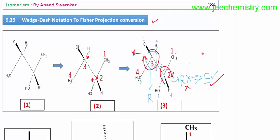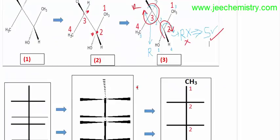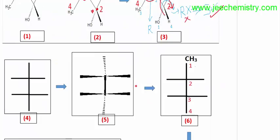Now we have to convert this to a Fischer projection formula. First of all, we write the bond notation of the Fischer projection formula. This is the Fischer formula with two chiral centers. We know that the horizontal line represents the wedge and the vertical line represents the dash.